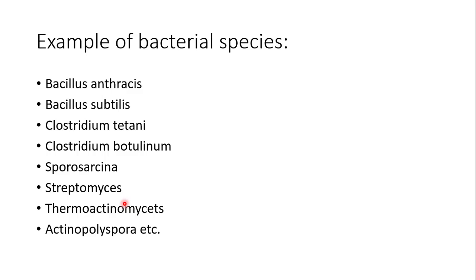Some bacterial species which produce spores include Bacillus anthracis, Bacillus subtilis, Clostridium tetani, Clostridium botulinum, and species of Sporosarcina, Streptomyces, Thermoactinomyces, and Actinopolyspora, among others.